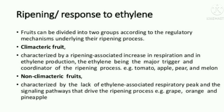Ripening response to ethylene: fruits can be divided into two groups according to the regulatory mechanisms underlying their ripening process. Firstly, climacteric fruit: characterized by a ripening-associated increase in respiration and in ethylene production, with ethylene being the major trigger and coordinator of the ripening process; examples include tomato, apple, pear, and melon. Non-climacteric fruit: characterized by the lack of an ethylene-associated respiratory peak, with other signaling pathways driving the ripening process; examples include grape, orange, and pineapple.